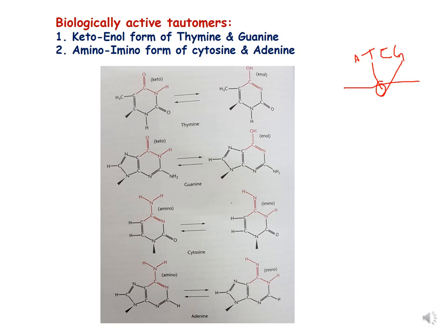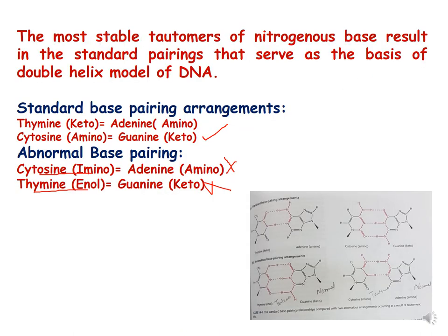As shown, thymine keto form is standard and enol form is the tautomer; guanine keto form is standard and enol form is tautomer; cytosine amino form is standard and imino form is tautomer. The stable tautomers of nitrogenous bases result in standard base pairing, which serves as the basis of the double helix model. Abnormal base pairing happens when bases are present in their tautomeric forms.